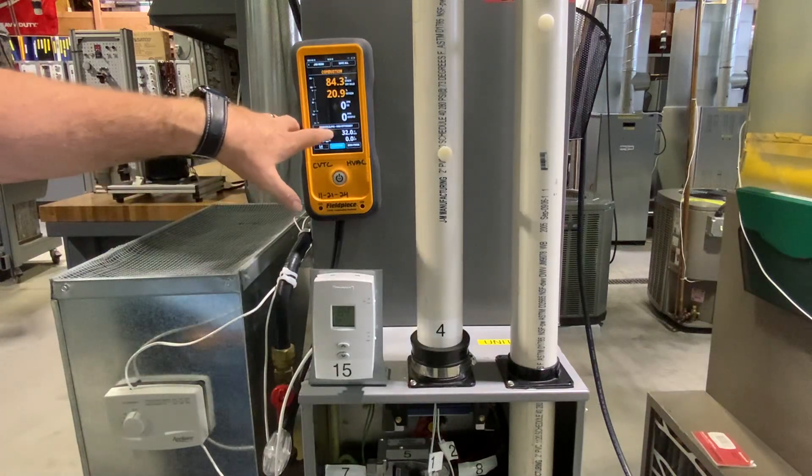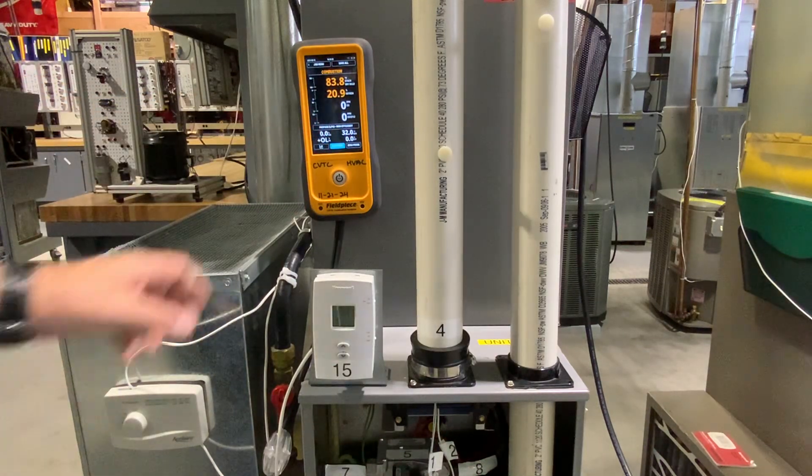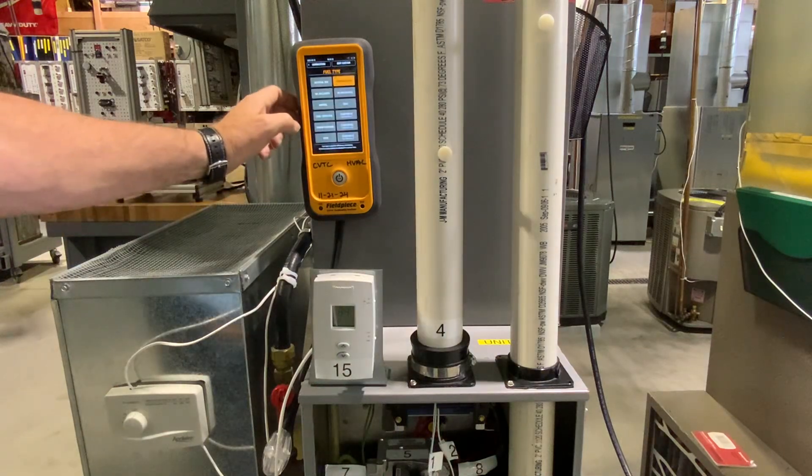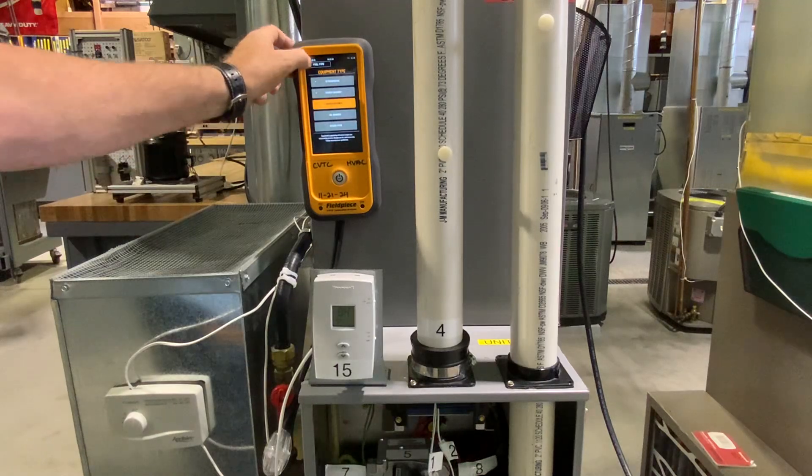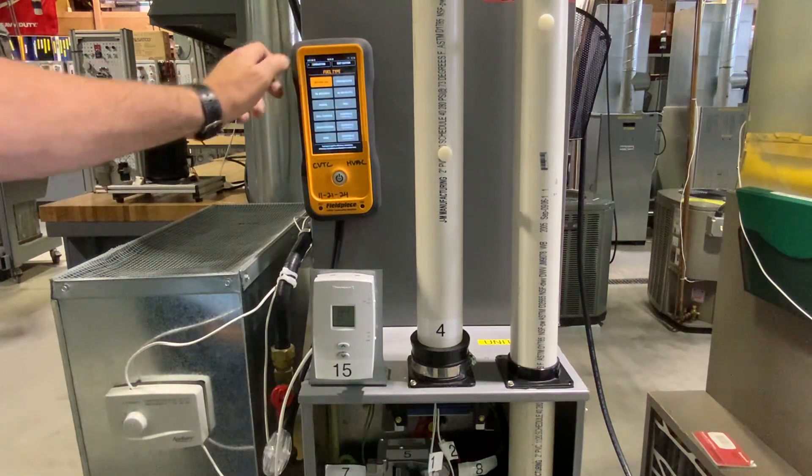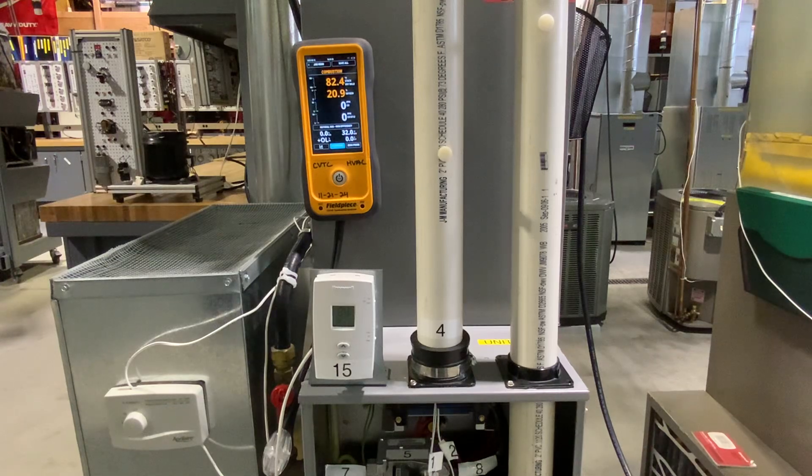First thing though, you can see this says propane high efficiency. Well this is a natural gas furnace. So make sure that you are on the right fuel. I can click on that, click natural gas, high efficiency, click back. Now I'm on natural gas high efficiency. So always make sure that your fuel matches what you're testing.